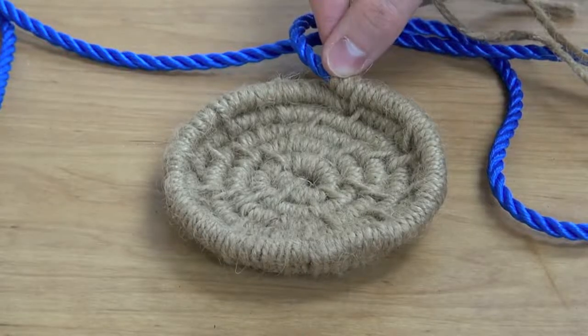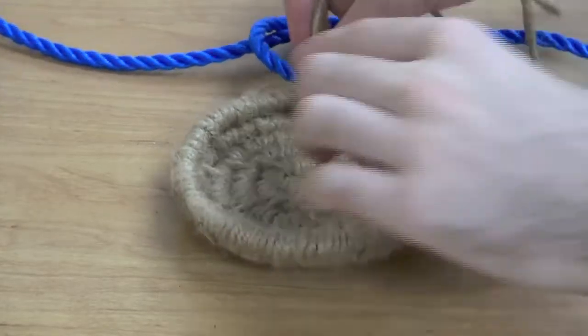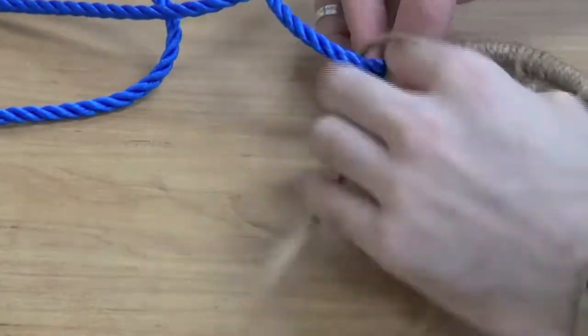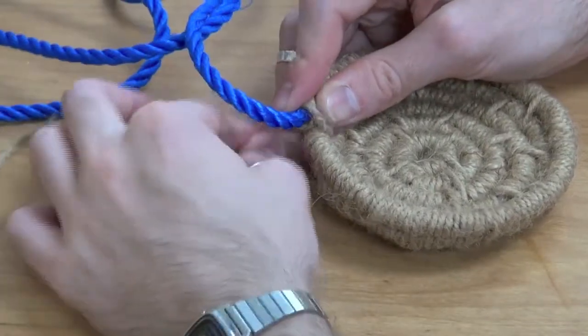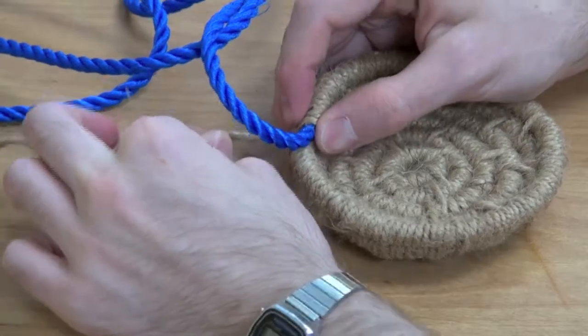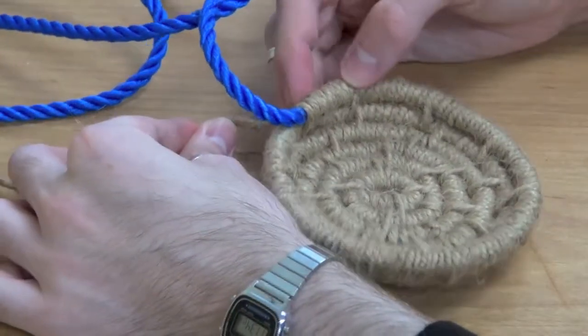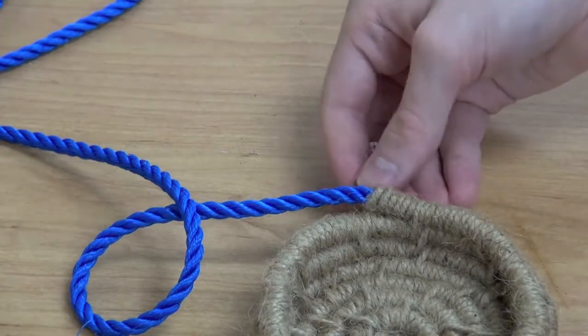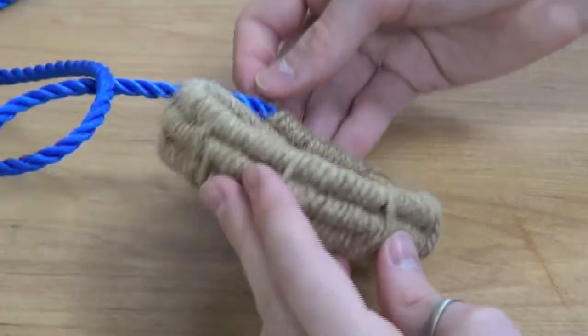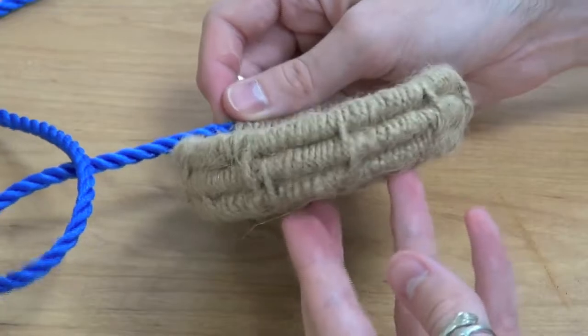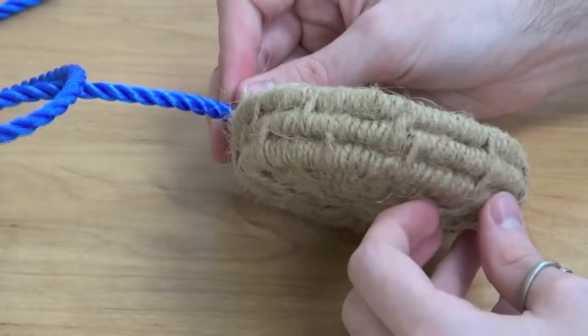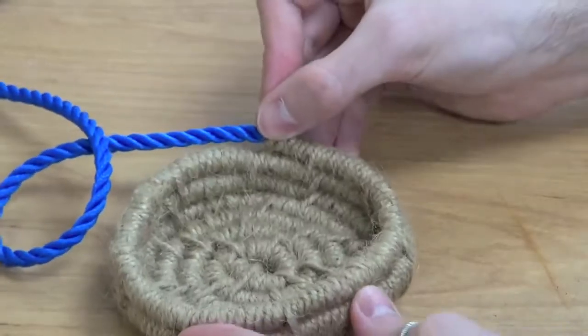Once you have created a lip, it should be easier to continue your coil basket all the way up. Making sure that they're becoming linear. As you can see, we've created a wall that will continue all the way up. The best part about this is you can choose whatever size you'd like.